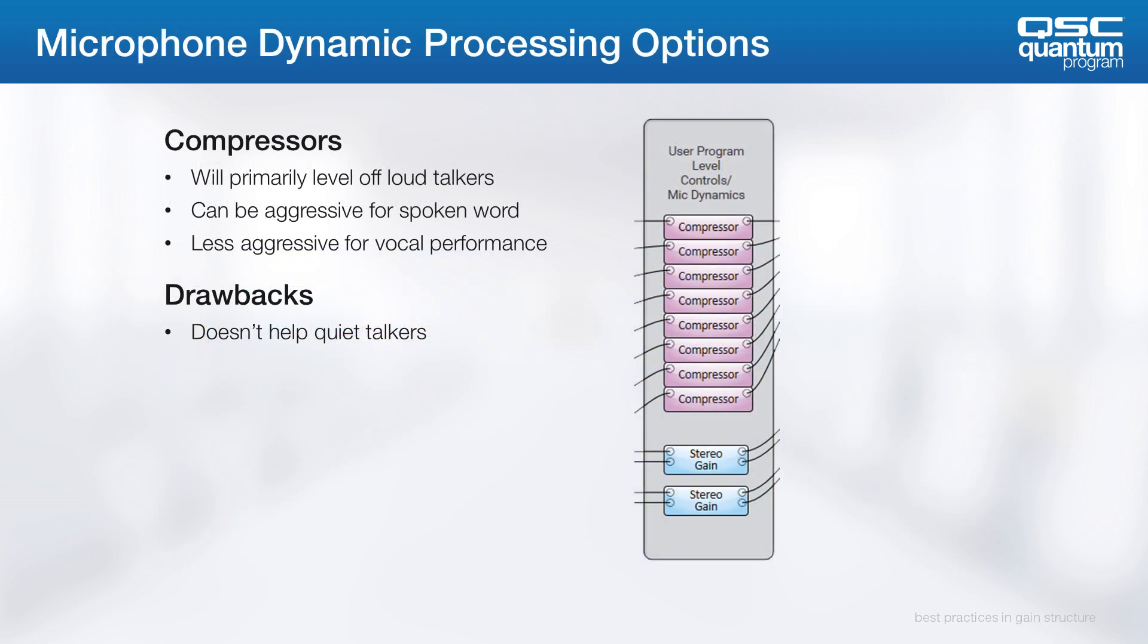When it comes to dynamic processing options for microphones, you could employ a compressor, which primarily is going to level off loud talkers. For spoken word, feel free to be fairly aggressive on these. But applying these to vocal performance, make sure to use that much more carefully. The drawback of the compressor is that it doesn't increase the level of quiet talkers.